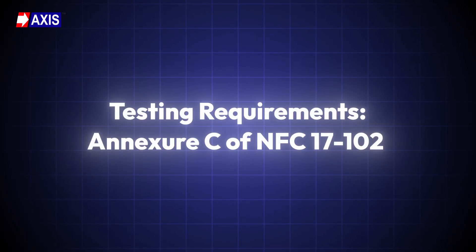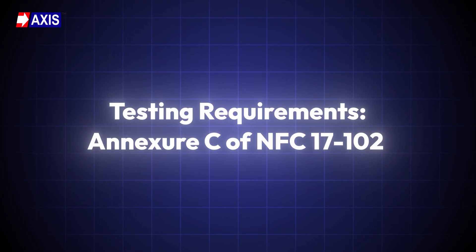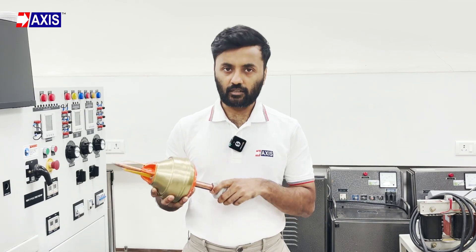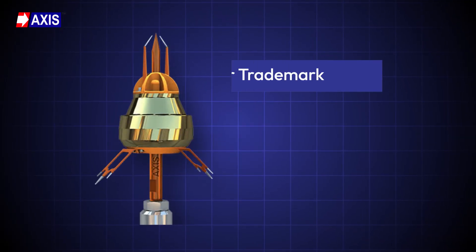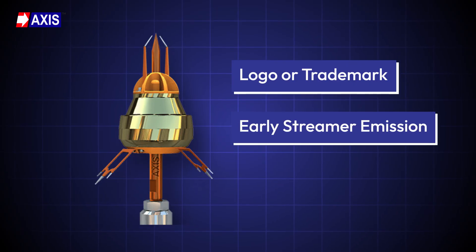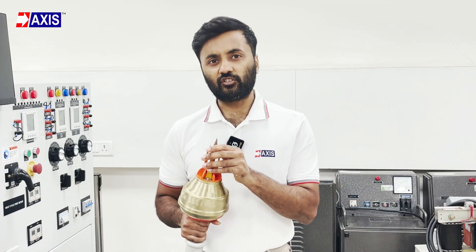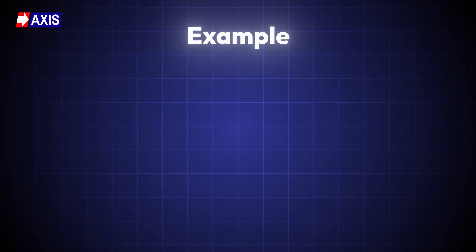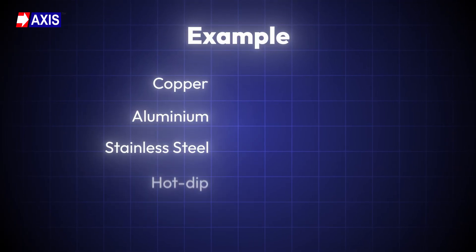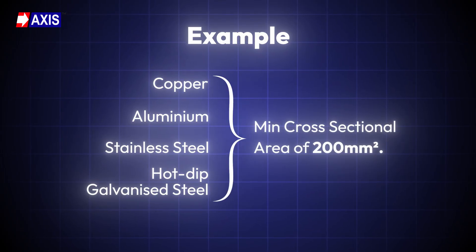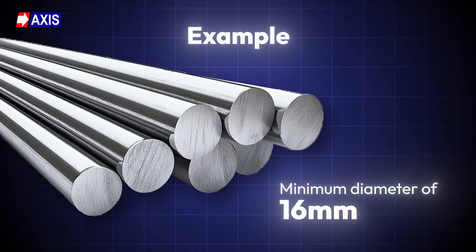Let's go through testing requirements as per Annexure C of NFC 17-102. First, the general requirements: your ESE arrester must be clearly marked with the manufacturer's name, logo or trademark, product reference, early streamer emission efficiency, and serial number. Second, mechanical requirements: the parts of the ESE arrester that carry lightning current must include solid materials with enough cross-section to carry high current safely. For example, copper, aluminum, stainless steel or hot-dipped galvanized steel must be used with a minimum cross-sectional area of 200 square millimeters, meaning a diameter of at least 16 millimeters for round rods.